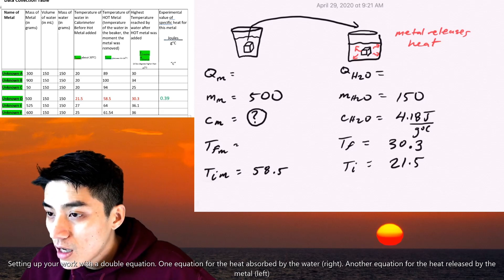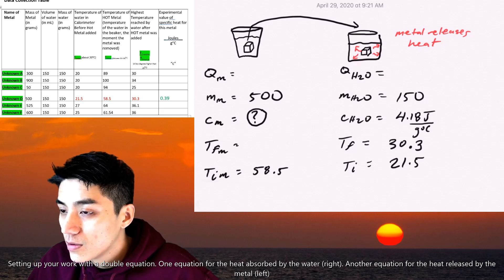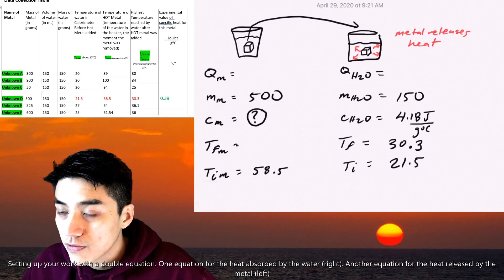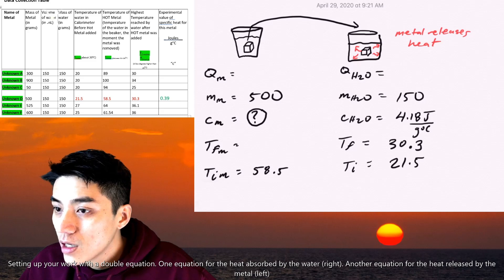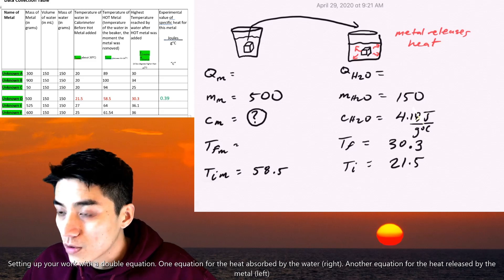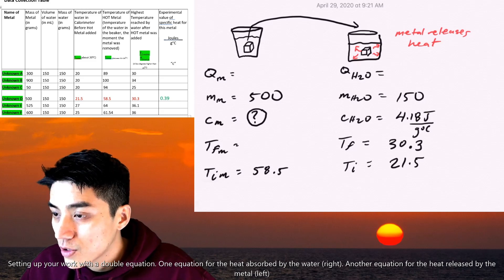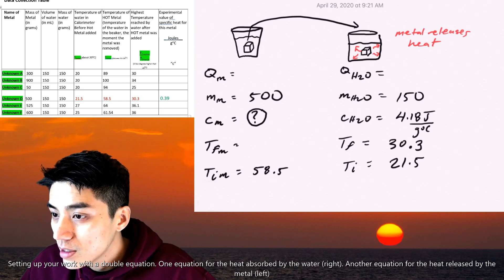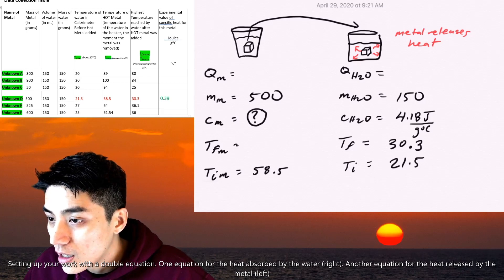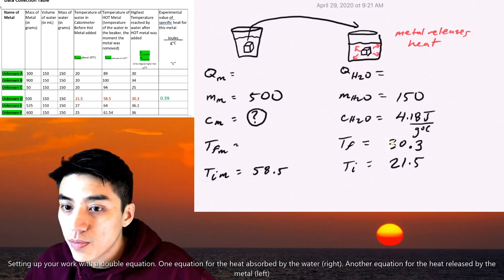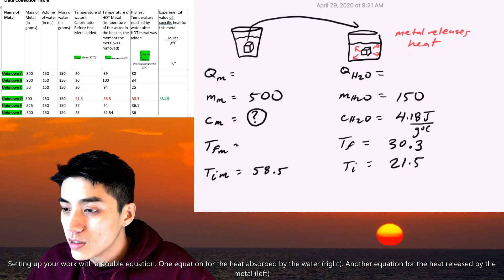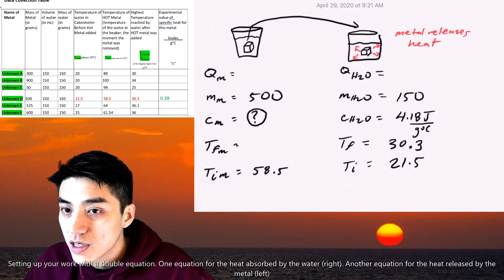So now I know what the mass of the water was. It was 150. It's also in the data table. So for all trials, the mass of the water is going to be 150. The specific heat of water is 4.18 joules per gram degrees Celsius. And finally, your T final is 30.3 degrees Celsius. And your T initial is 21.5, which you guys saw in that clip.